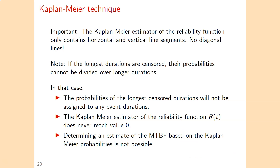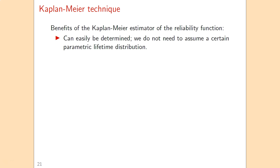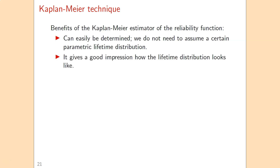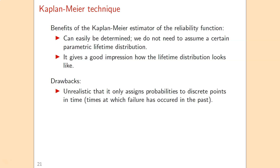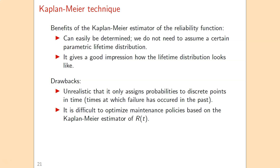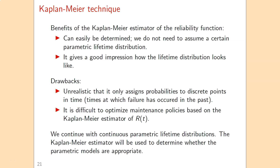If the reliability function never reaches 0, it can be difficult or even impossible to determine a valid estimate for the mean time between failures. The benefits of the Kaplan-Meier estimator are that it can easily be determined without assuming a parametric lifetime distribution, and it gives a good impression of how the real lifetime distribution looks. Drawbacks are that assigning probabilities only to discrete points in time is unrealistic, and it is very difficult to optimize maintenance policies based on this step function — which is why we continue with continuous parametric lifetime distributions. The Kaplan-Meier function remains useful for assessing whether parametric distributions fit the data well.